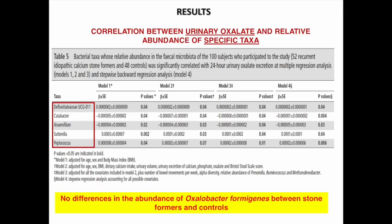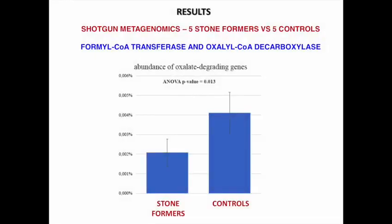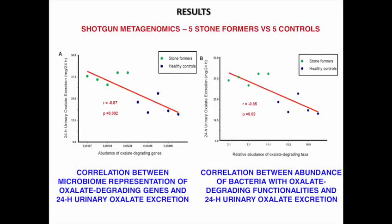We did not find any difference in the abundance of Oxalobacter formigenes between stone formers and controls, which was quite unexpected. Shotgun metagenomics analysis showed that the microbiome representation of genes involved in oxalate degradation was lower in stone formers than in controls. The representation of these genes and the cumulative abundance of species harboring them were negatively correlated with urinary oxalate excretion.